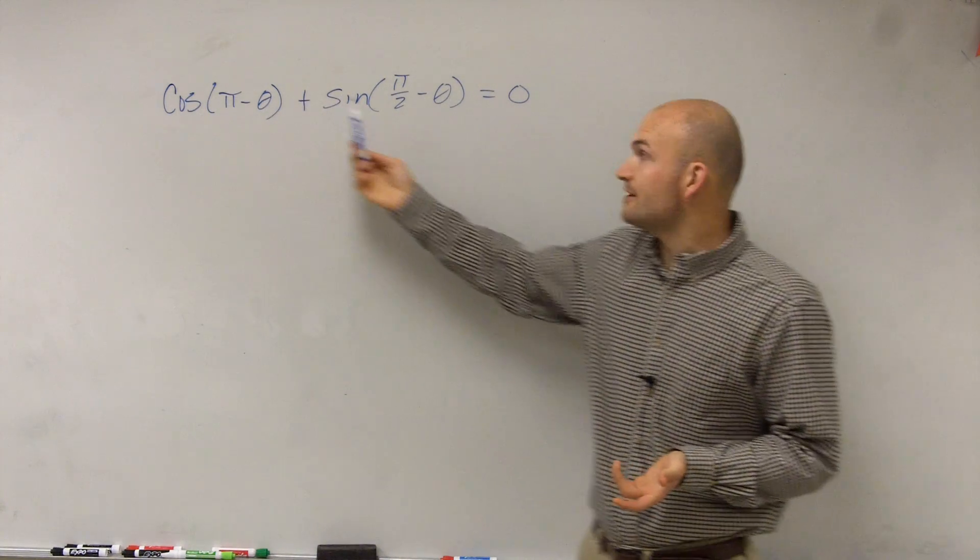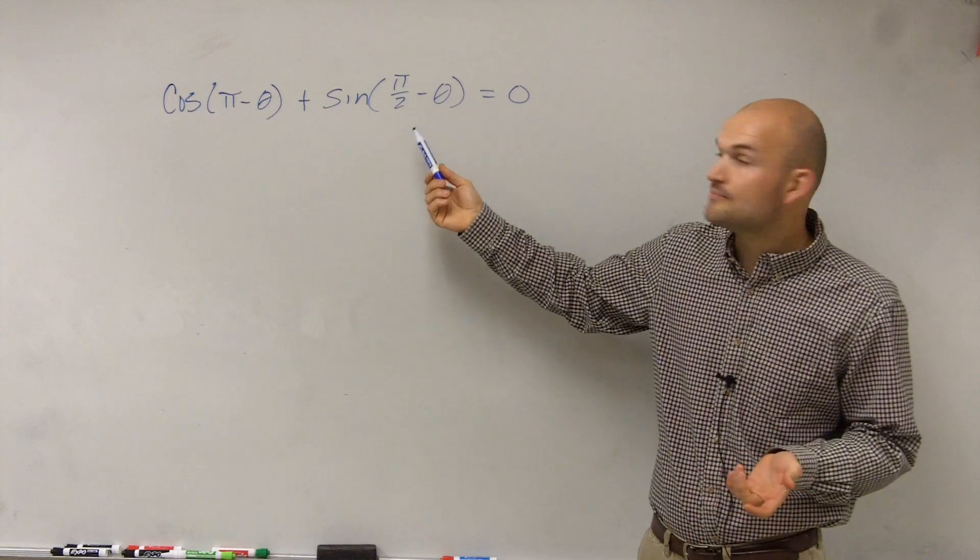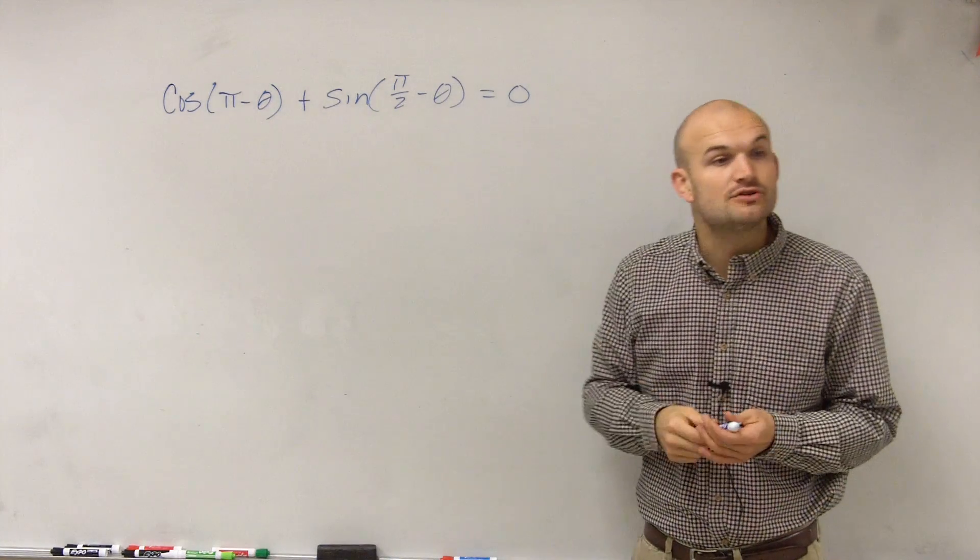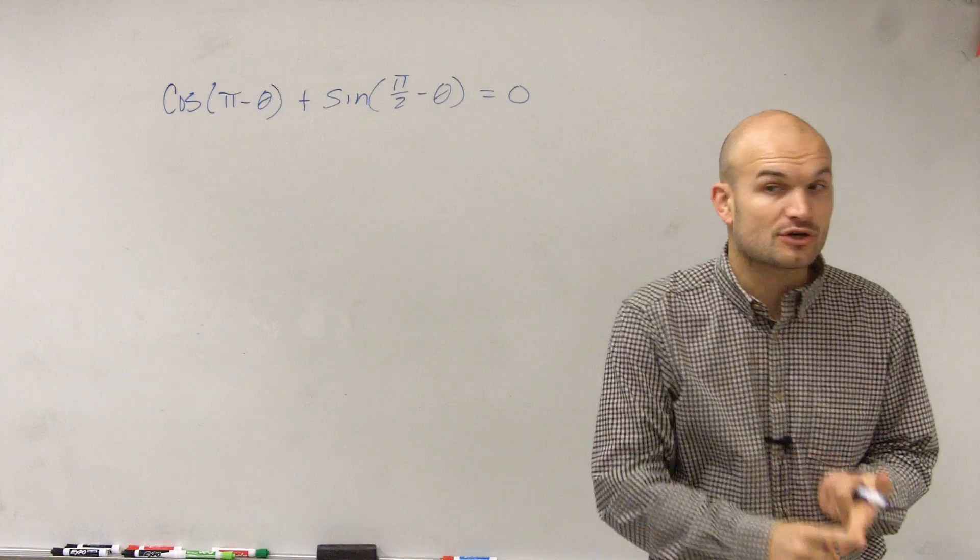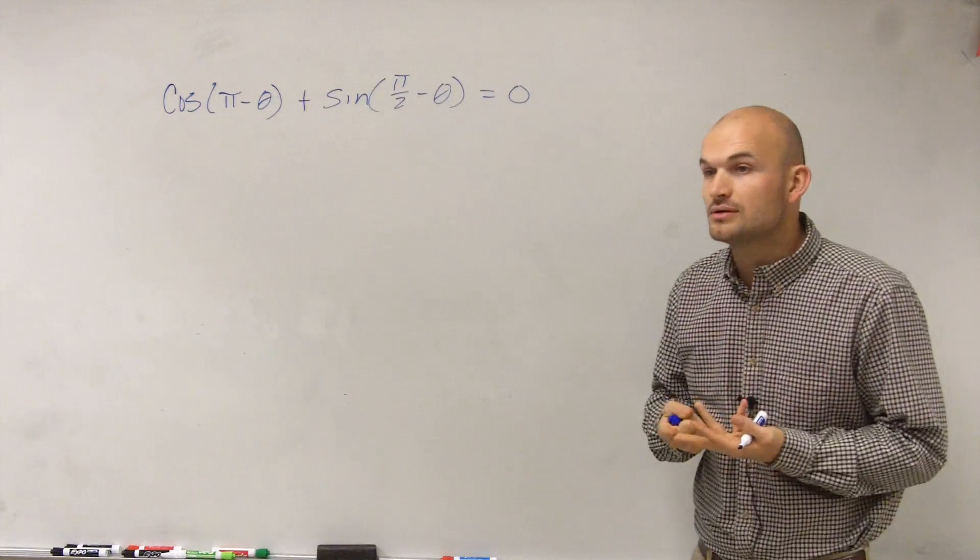We notice that we have the difference of two angles, which we're using together for cosine, and we're using for sine.